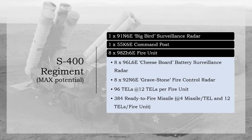An S-400 regiment at its maximum potential consists of one Big Bird surveillance radar, one command post, and eight fire units which between them have eight battery surveillance radars, eight fire control radars, 96 TELs, and 384 ready-to-fire missiles.